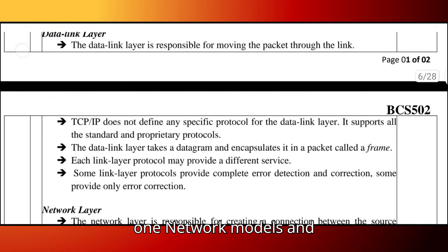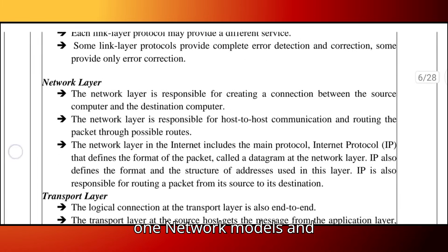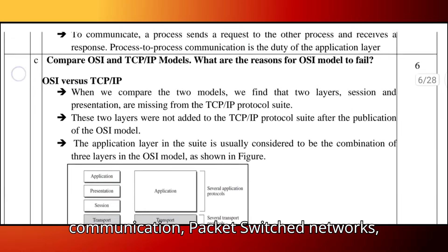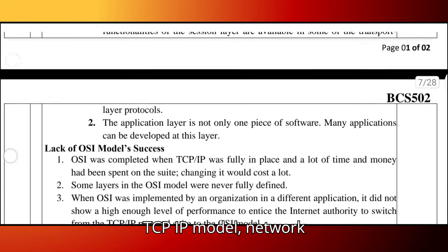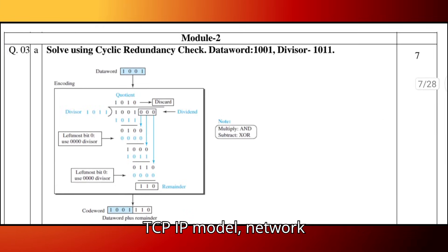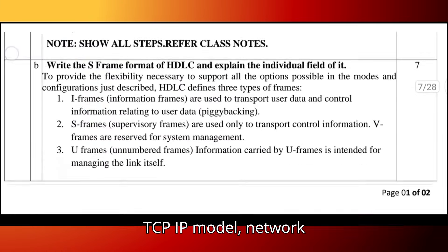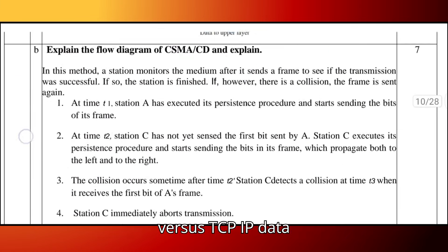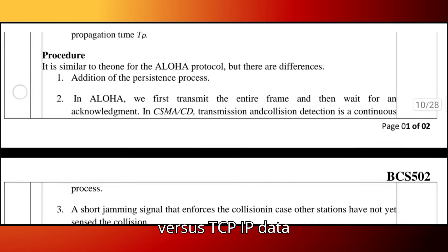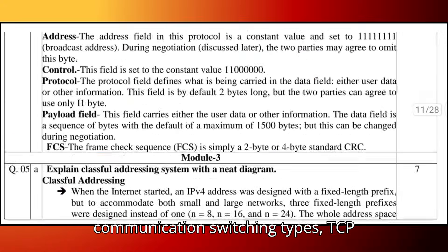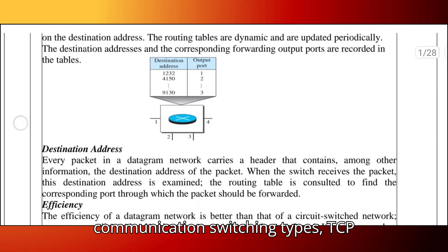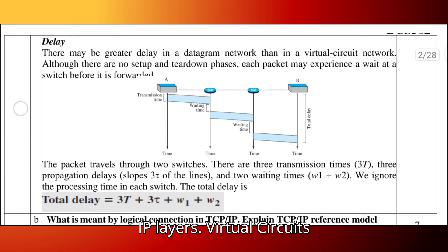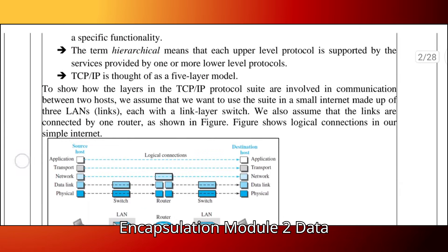Module 1 covers network models and communication, including packet switched networks, TCP/IP model, network topologies, transmission media, OSI versus TCP/IP, data communication, switching types, TCP/IP layers, virtual circuits, and encapsulation.